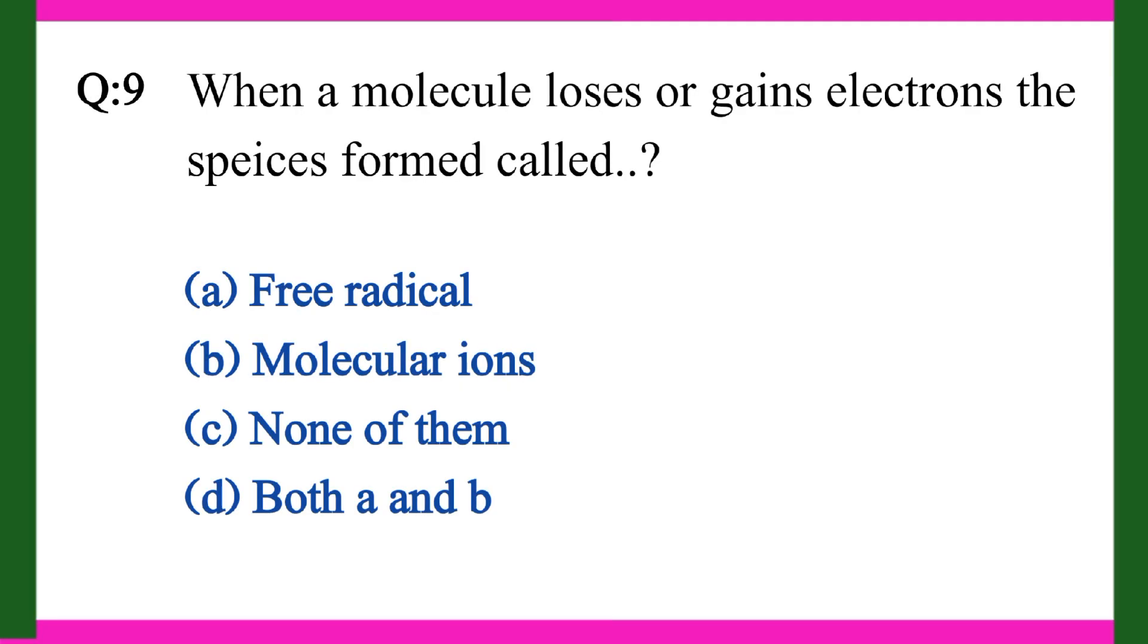Question nine: When a molecule loses or gains electrons the species formed called. A. Free radical, B. Molecular ions, C. None of them, D. Both A and B. Right answer is B. Molecular ions.